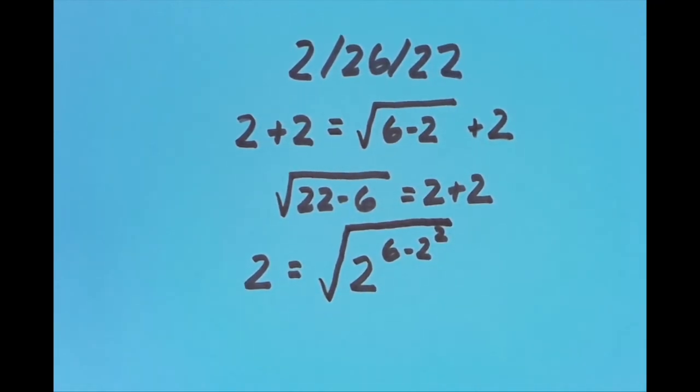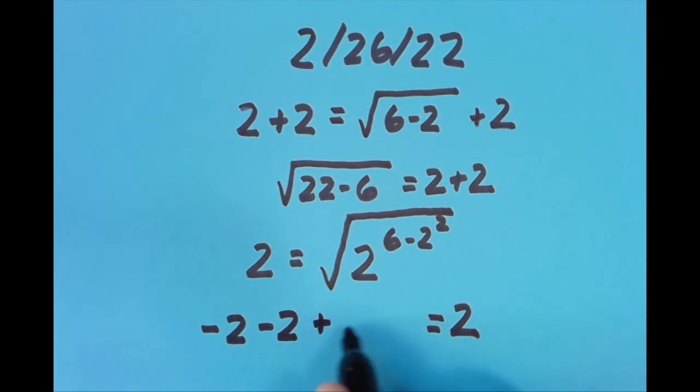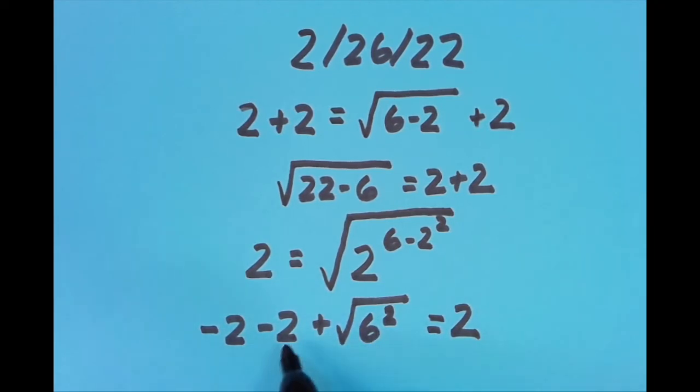I need to do one more with the equal sign in the last position. So I said negative 2 minus 2 plus the square root of 6 squared. That gives us 36, the square root of 36 is 6, negative 2 minus 2 is negative 4, plus 6 equals 2. That's how I chose to make equations using the digits in today's date. I know there are lots of other ways, and if you found some ways you'd like to share in the comments, please feel free to do so.